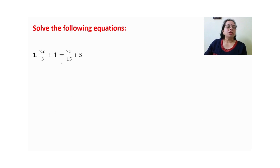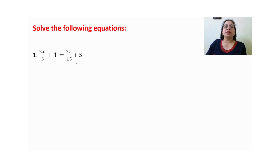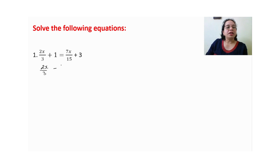Now next question. यहाँ हम variables को एक साथ और constants को एक साथ लेंगे — choice आपकी है, left hand side और right hand side को अलग-अलग solve करके भी कर सकते हैं। Shifting: 2x upon 3 minus 7x upon 15 is equal to 3 plus 1, which becomes minus 1 on right hand side.